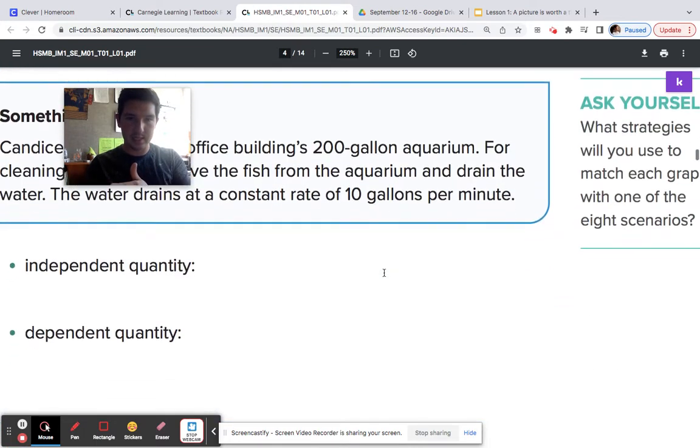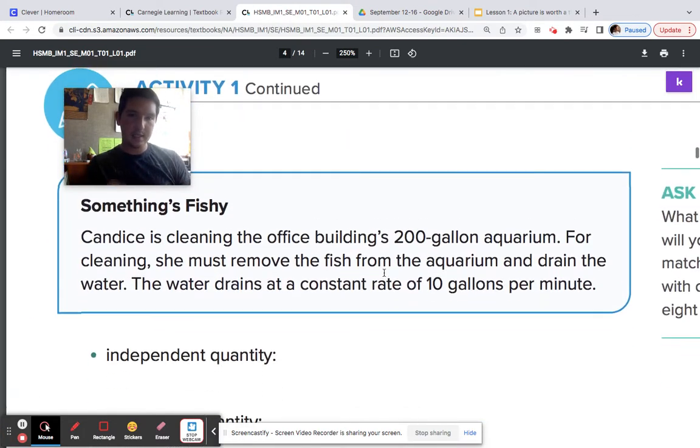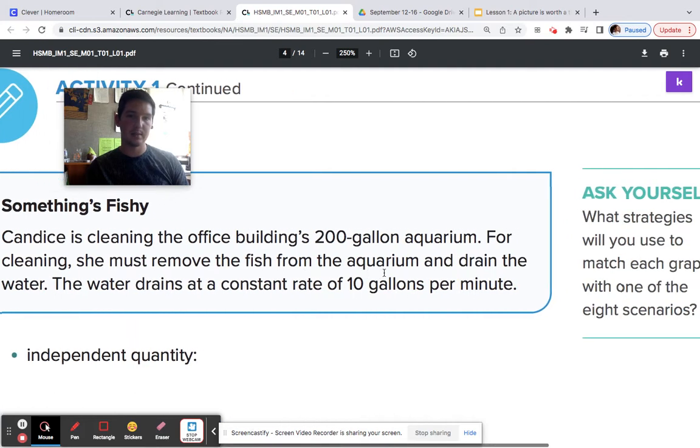So now if we're going down to the second scenario here, Candace is cleaning the office building's 200-gallon aquarium. For cleaning, she must remove the fish from the aquarium and drain the water. The water drains at a constant rate of 10 gallons per minute.